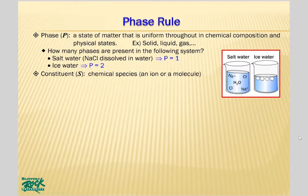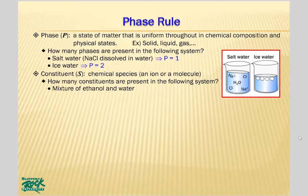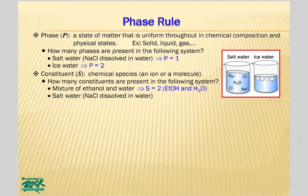A constituent is a chemical substance that is present in a system. It can be an ion or a molecule. How many constituents are present in a mixture of ethanol and water? Obviously, there are two constituents: ethanol and water. How many constituents are present in salt water or NaCl solution? Water, Na⁺ ion, and Cl⁻ ion — so it's three.